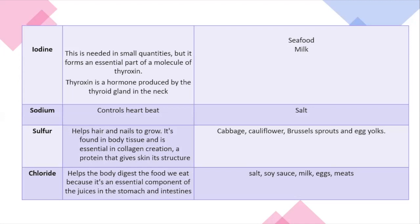In that same table, extend it. We have a mineral called iodine. Iodine is needed in small quantities but it forms an essential part of a molecule of thyroxine. Thyroxine is a hormone produced by the thyroid glands in the neck. So we need iodine to produce a hormone called thyroxine, and hormones are very important because they allow messages to be sent in our body.